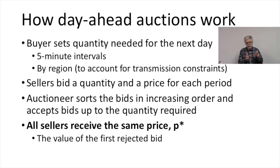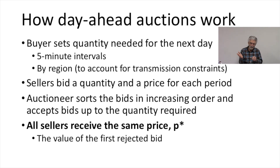Sellers bid a quantity and a price. The sellers of electricity are saying: I'll provide this much electricity if I can get at least this amount for it. I'll be happy to take more if that's the closing price at auction, but I will sell it if the price is at least this amount.